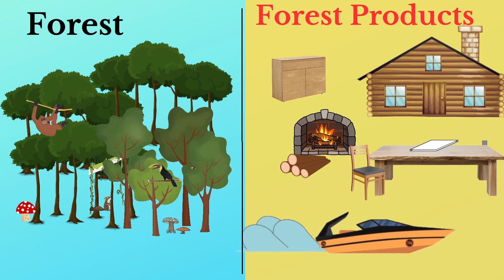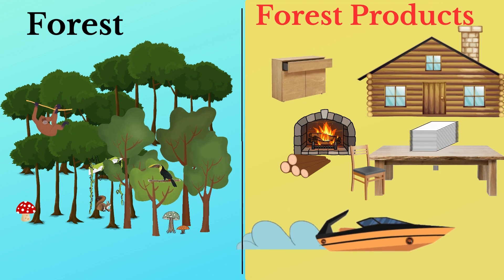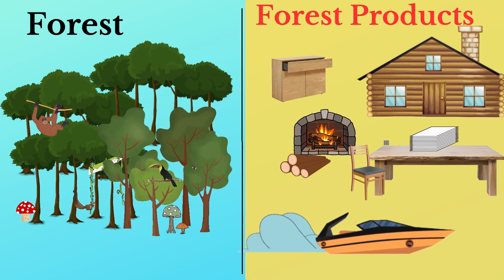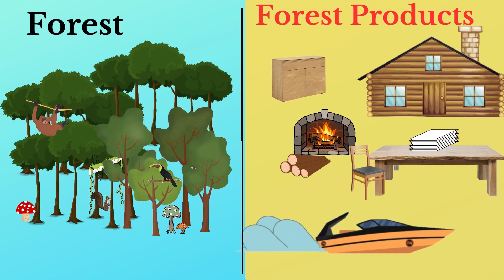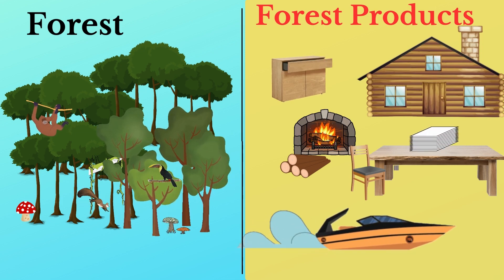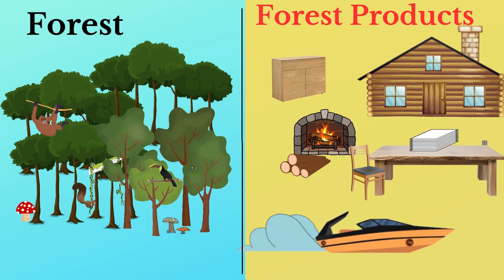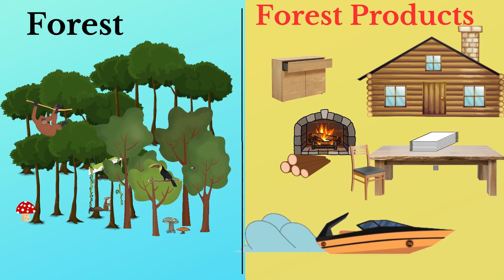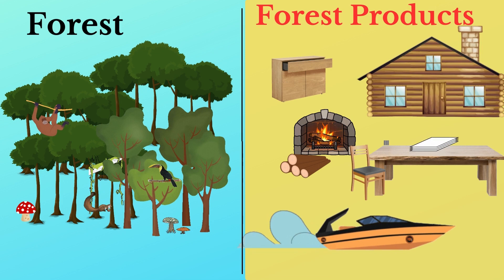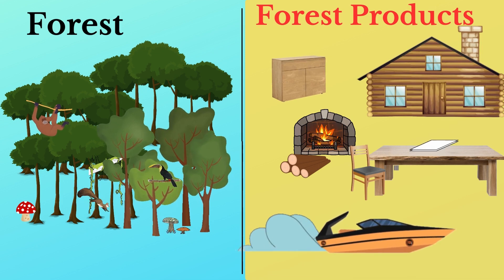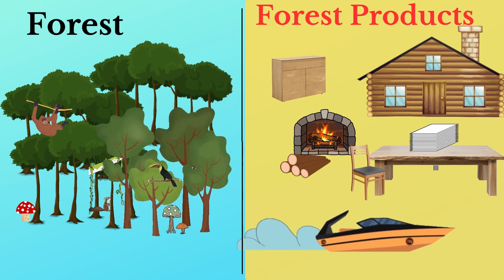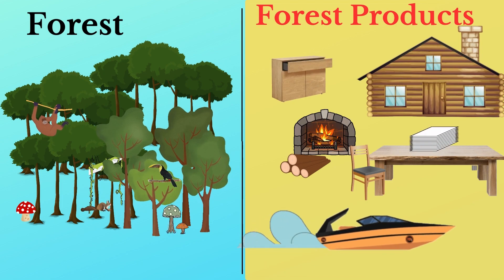Forest is used for a variety of purposes including shipbuilding, building construction, furniture, paper, fuel, and so on. In the process of extracting these resources, a whole area of land can be cleared away — this is referred to as deforestation. Deforestation can destroy the homes of wildlife, cause landslide and soil erosion, and can also reduce the rate at which carbon dioxide is removed from the atmosphere.